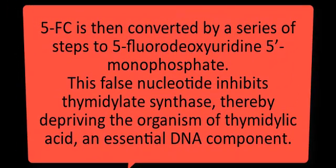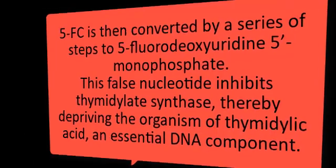Antimetabolite: Flucytosine. It is a pyrimidine antimetabolite and is inactive as such. Flucytosine is taken up by fungal cells via the enzyme cytosine permease. 5-FC is then converted by a series of steps to 5-fluorodeoxyuridine-5-monophosphate. This false nucleotide inhibits thymidylate synthase, thereby depriving the organism of thymidylic acid, an essential DNA component.